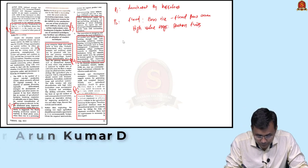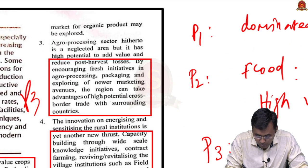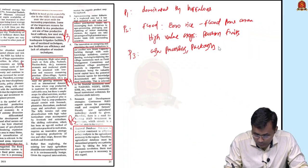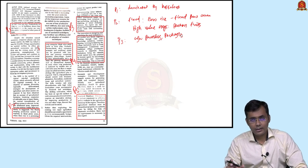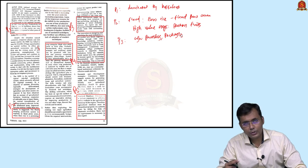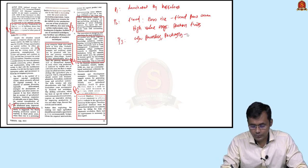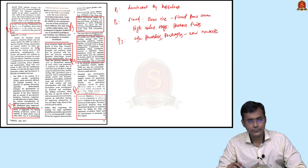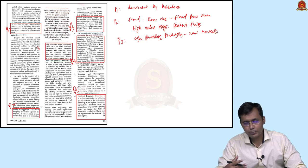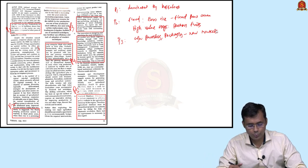Agro-processing and packaging present another opportunity. The Northeastern region shares borders with Southeast Asian countries, making it strategically positioned as a gateway for agricultural exports under India's Act East Policy. If agricultural processing industries are developed here, Northeastern states can tap into new markets in Asian countries, giving agriculture a commercial dimension beyond subsistence farming.